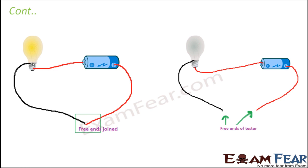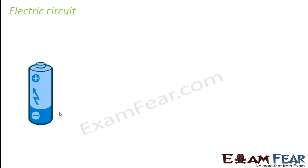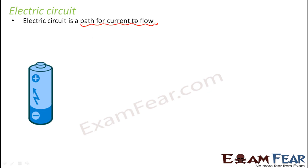This setup on the screen is nothing but a circuit. A circuit is basically an arrangement where different components are all connected to each other, providing a path for electric charges to flow so that current can flow. If we define electric circuit simply: it is a path for current to flow — just like the bridge is a path needed for the cyclist.